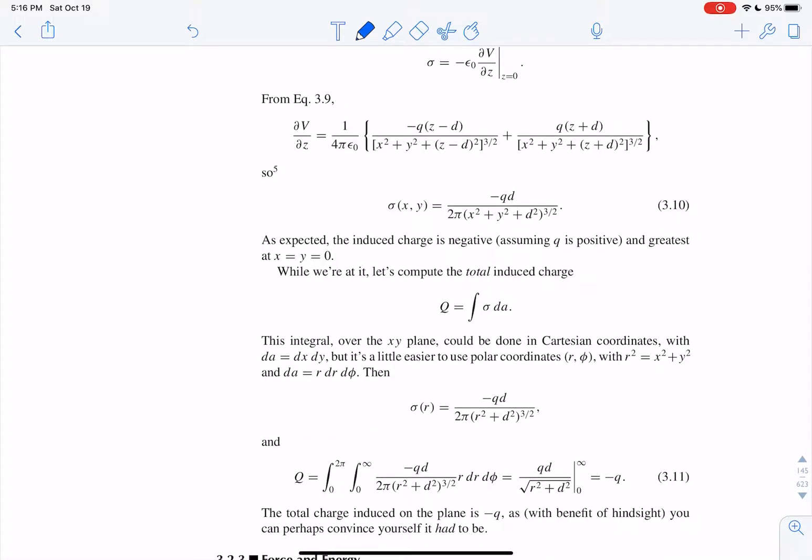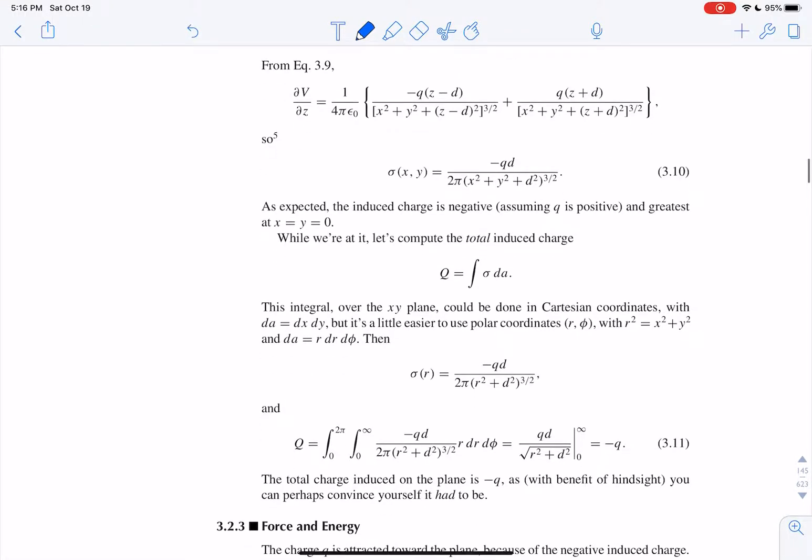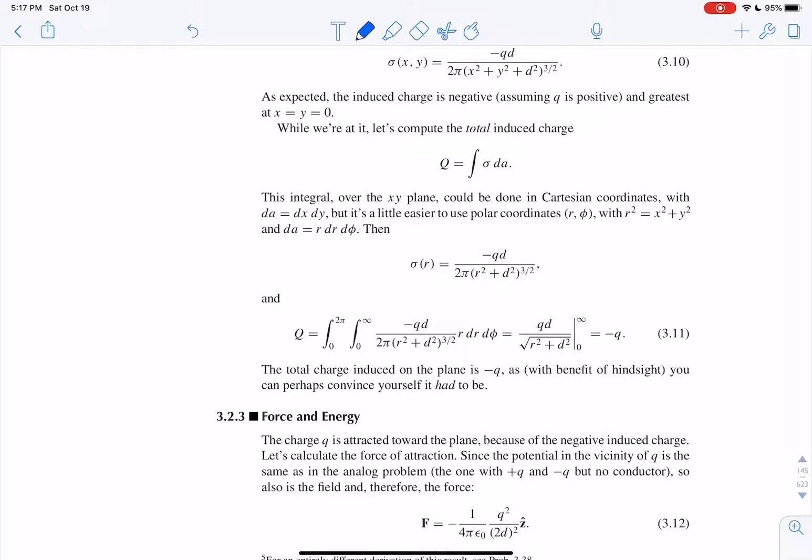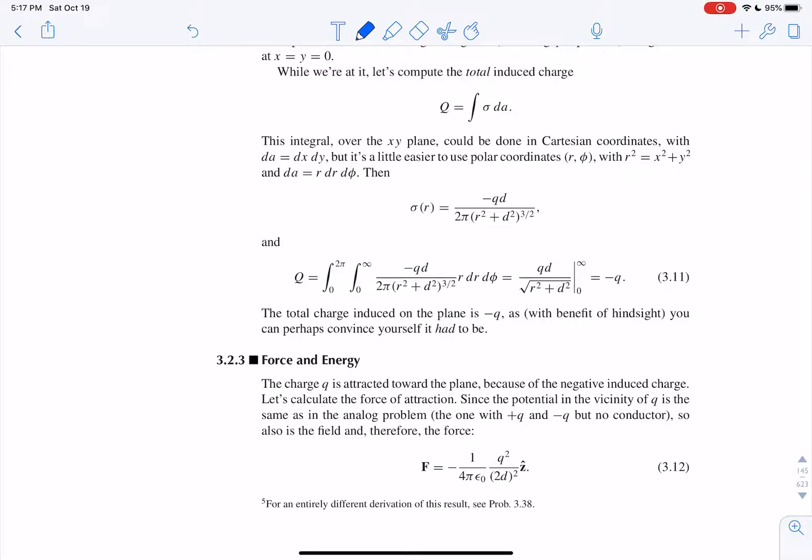So the induced charge on the surface is just the derivative of the potential with respect to the normal direction, in this case z. And that gives us the sigma charge density. As expected, the induced charge is negative, assuming q is positive. Then we can, I guess, calculate the total charge on the surface, which is the integral of sigma times the area. And they, okay, so he goes into polar coordinates here to replace x squared and y squared with r. And then we've got our theta and d phi and so on. Put that in there and we're going to integrate around 0 to 2 pi and then from 0 out to infinity. And you get that the induced charge on the plane is minus q.